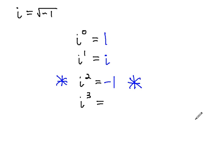If we were to multiply both sides of this equation by i, we would get i cubed equals negative 1 times i, or negative i.